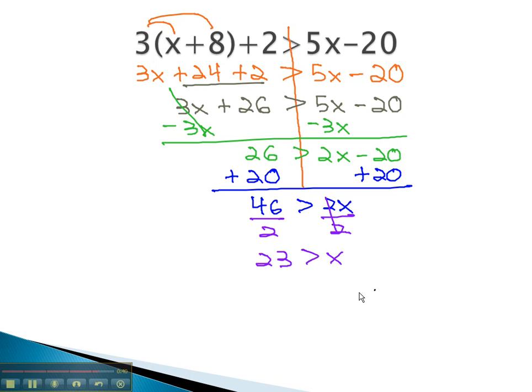We can graph this again on a number line, so we have a visual representation of our solutions. We will use an open dot at 23 because it's not equal to. Notice the inequality points at the x. The x is the smaller value here, so we shade our line down towards smaller numbers.